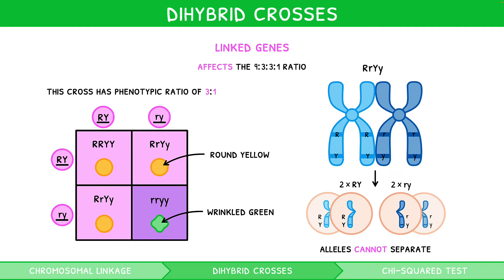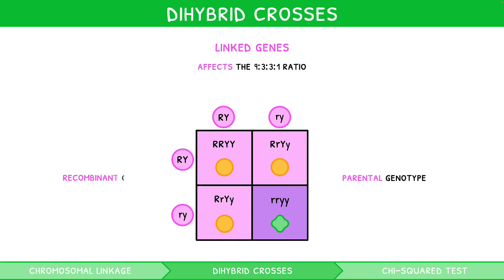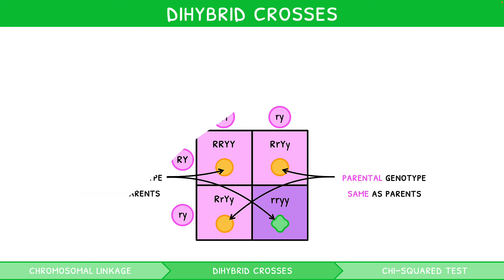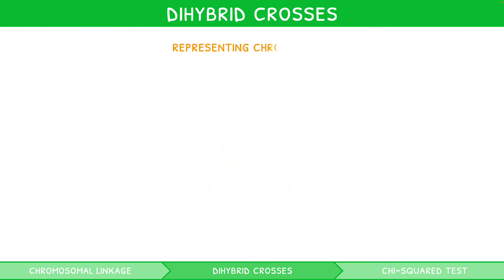Two important terms used in dihybrid crosses of linked genes are parental and recombinant genotypes. Parental genotypes are the offspring genotypes identical to the original parents — here, the two heterozygous RrYy genotypes. Recombinant genotypes are the offspring genotypes different to the original parents — here, the homozygous dominant RRYY and homozygous recessive rryy genotypes. Questions can sometimes take the form of visual representations of chromosomes using straight lines, asking you to identify recombinant and parental genotypes. The principles are exactly the same — it is just a different way of representing the information.